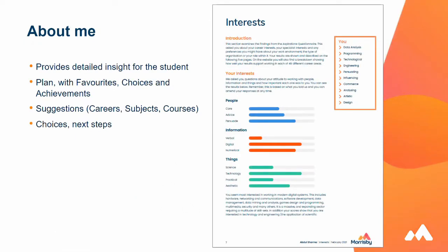Going back to the About Me section — it provides students with detailed insight about where their interests are when it comes to their aspirations, such as working with people, information, and so on. The questionnaires are worded to allow students to rate statements about themselves. When we present the results back, we present them in a format that is also included as a document within their locker, which they can download and share with parents. It also looks at suggested career subjects, courses, and choices for next stages.